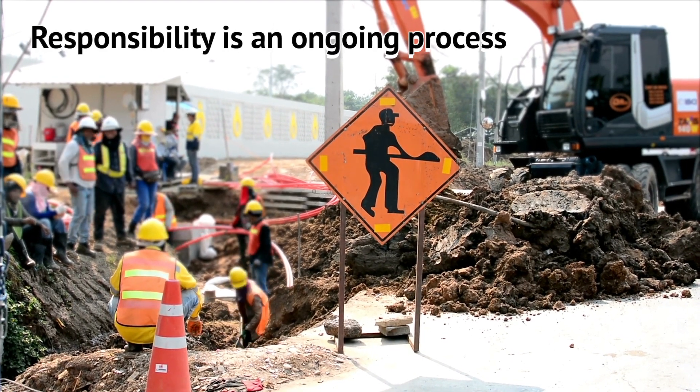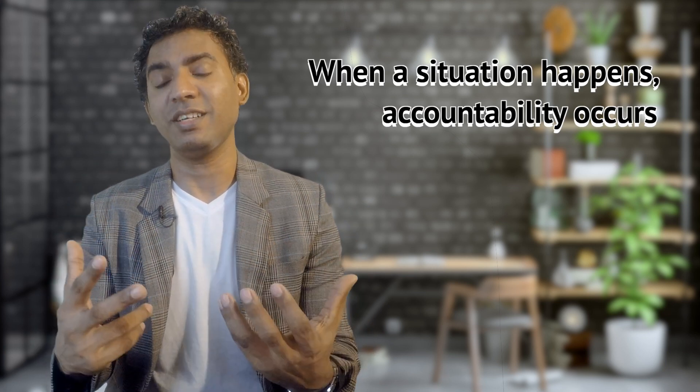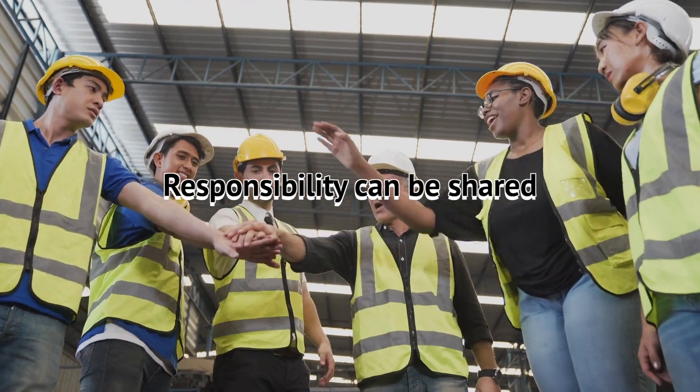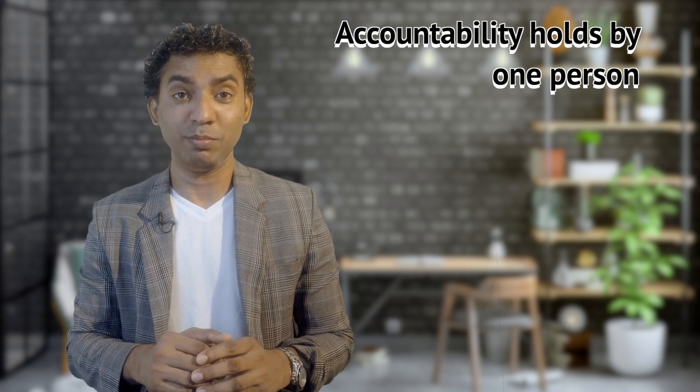Responsibility is typically an ongoing process. Accountability happens when a situation occurs, when something happens. Responsibility can be shared by multiple people. But on the other hand, accountability is held by one particular person, most probably the manager, leader, or the project head.